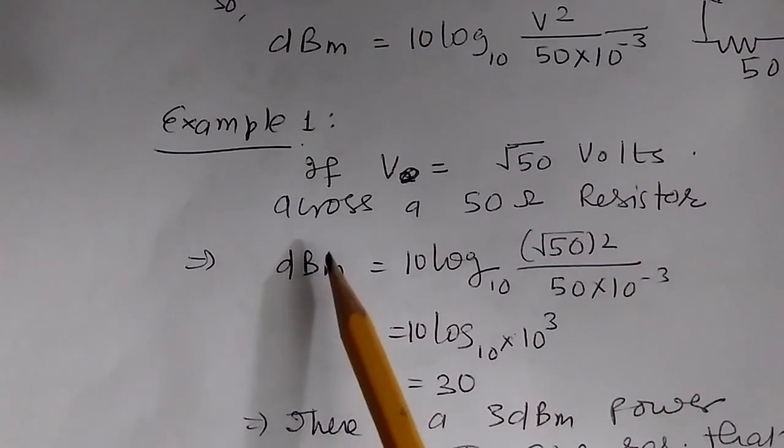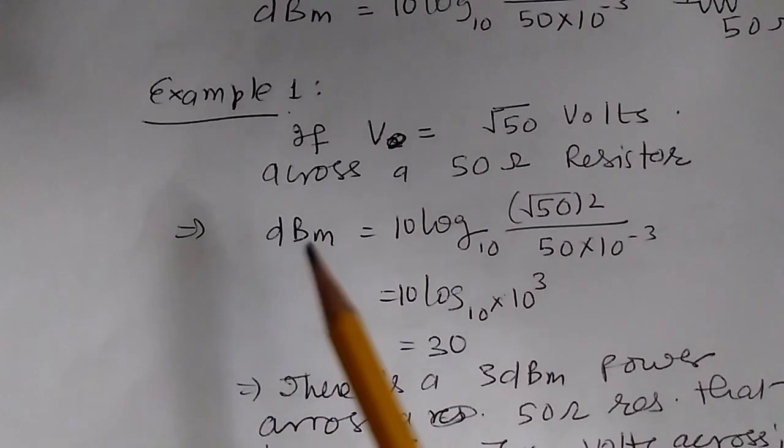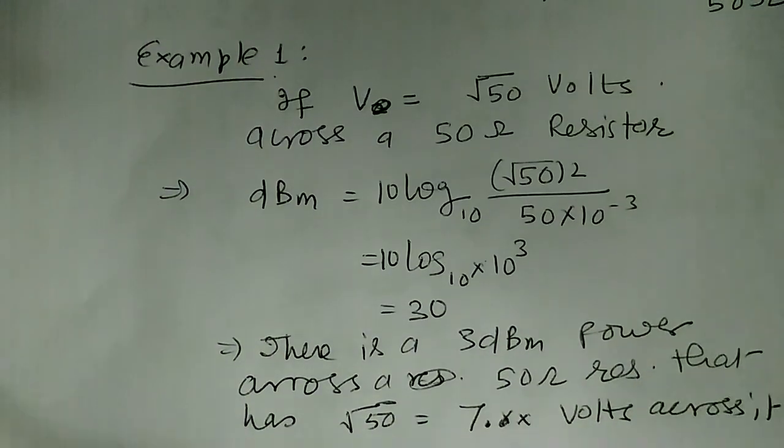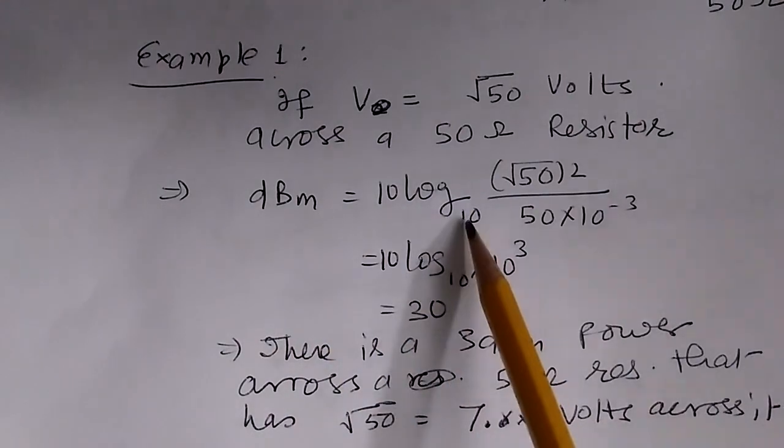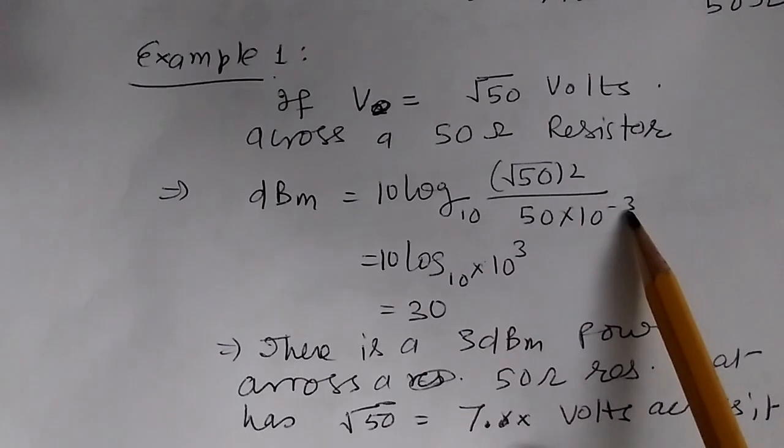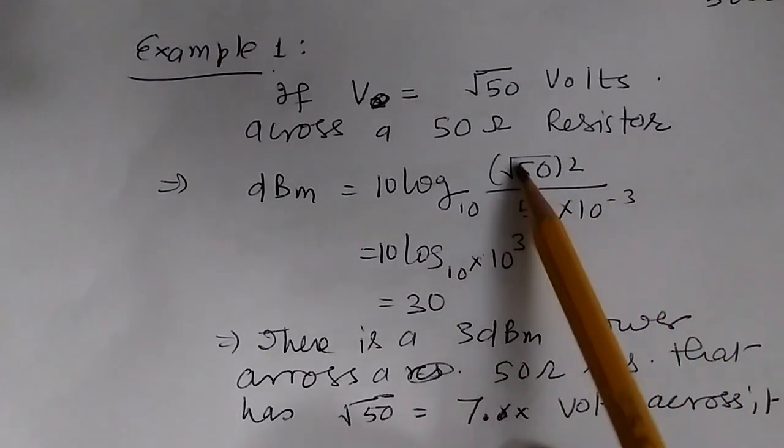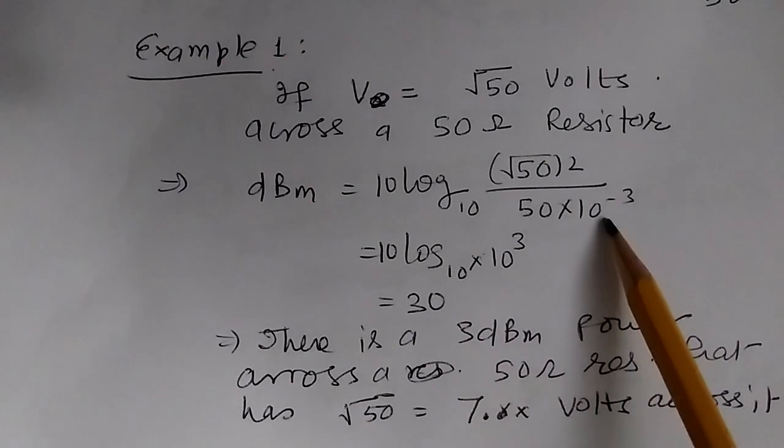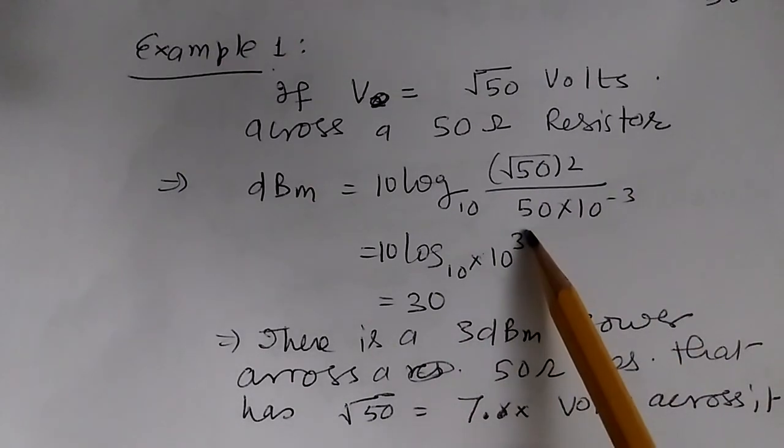We need to find the power in dBm across that resistor. dBm = 10 log₁₀((√50)² / (50 × 10⁻³)). Since (√50)² = 50, we get 50/50 which cancels.